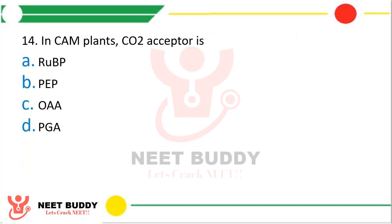Question 14. In CAM plants, the carbon dioxide acceptor is — RuBP, PEP, OAA, or PGA? The correct answer is option B, PEP.